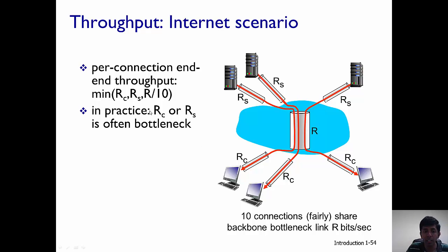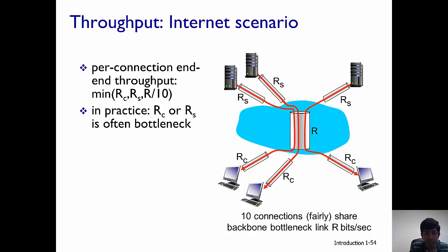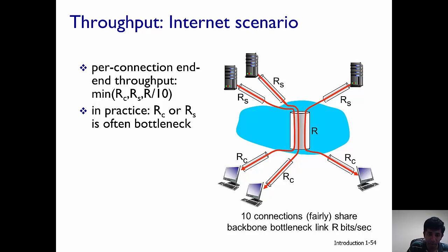In practice, it is mostly R_s or R_c that is the bottleneck, and not R. To conclude, throughput is the rate between the sender and receiver, measured in bits per second. To calculate throughput, use the fluid model and consider the capacity of each intermediate link — the minimum capacity link is the bottleneck and determines the end-to-end throughput.